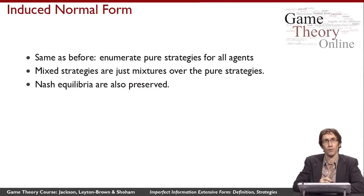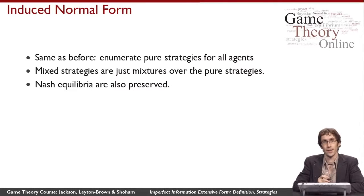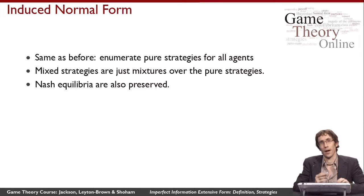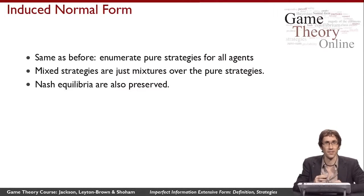For example, we know from Nash's theorem that a Nash equilibrium always exists for every imperfect information extensive form game, because we can always produce a finite normal form game from it. This transformation can make the game exponentially bigger, as it could before, but for existence of equilibrium that doesn't matter.